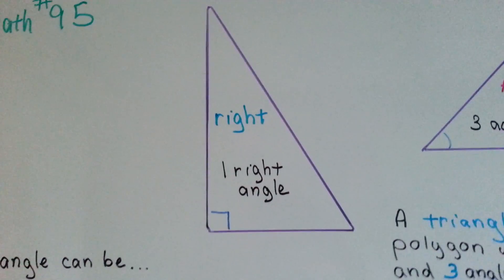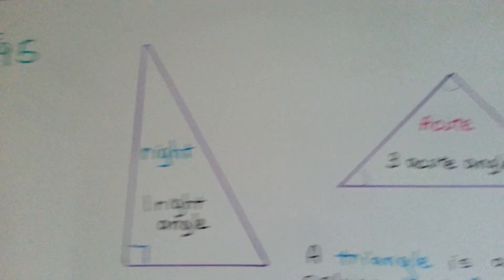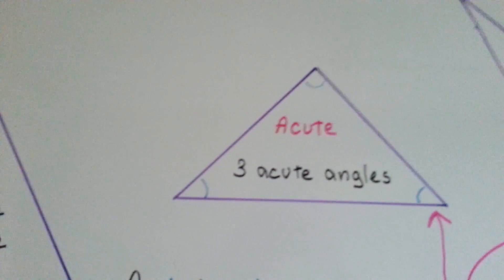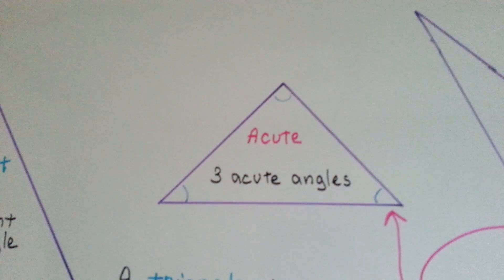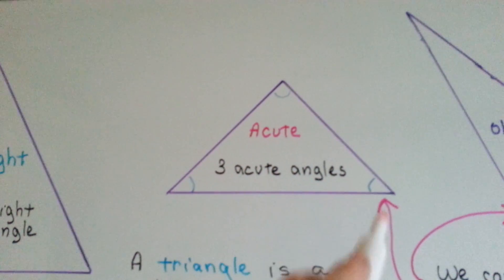A right triangle has one right angle. See, right here, it's like a square. An acute triangle has three acute, cute little angles. Three little angles.